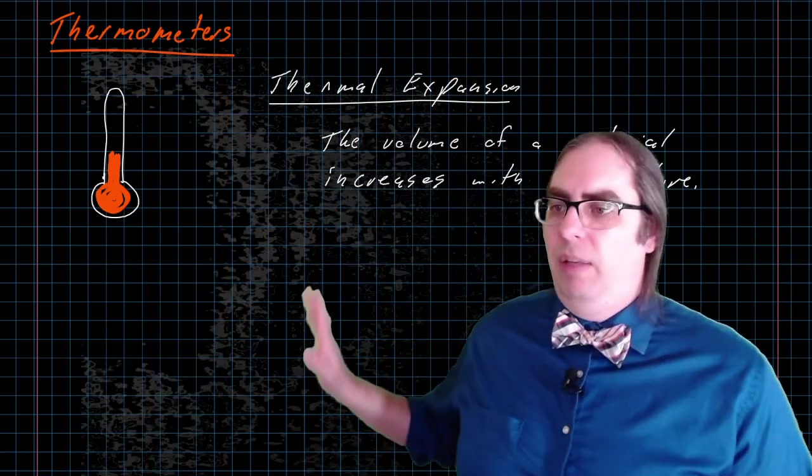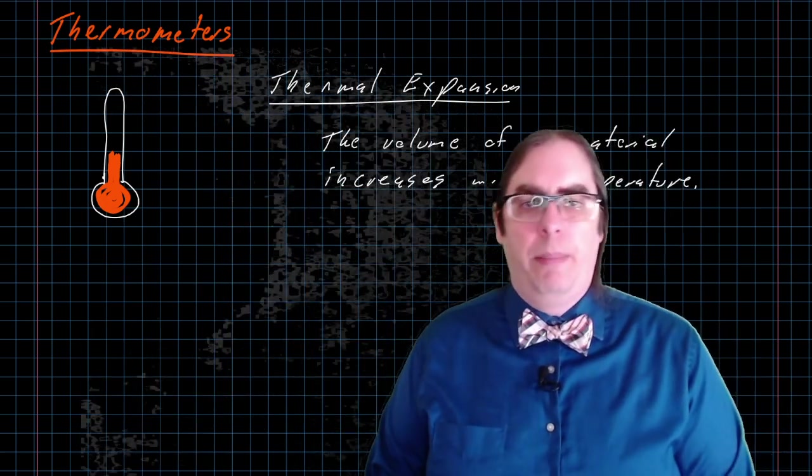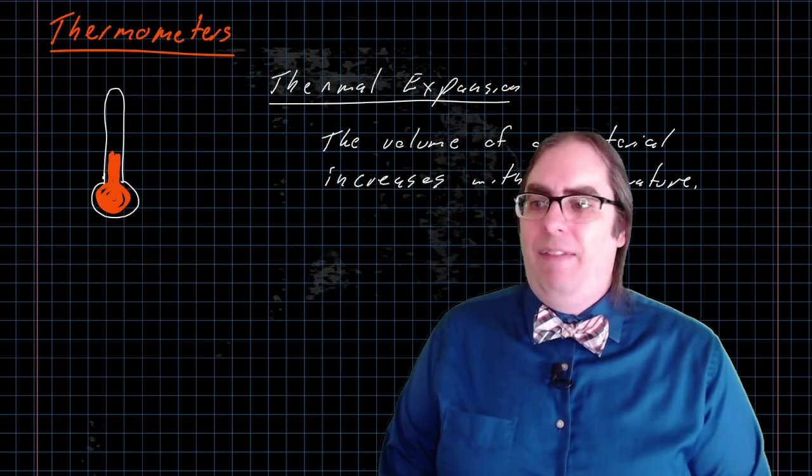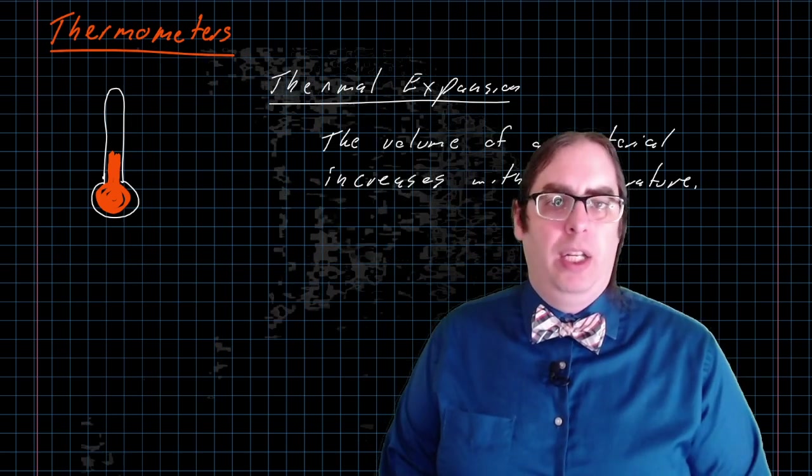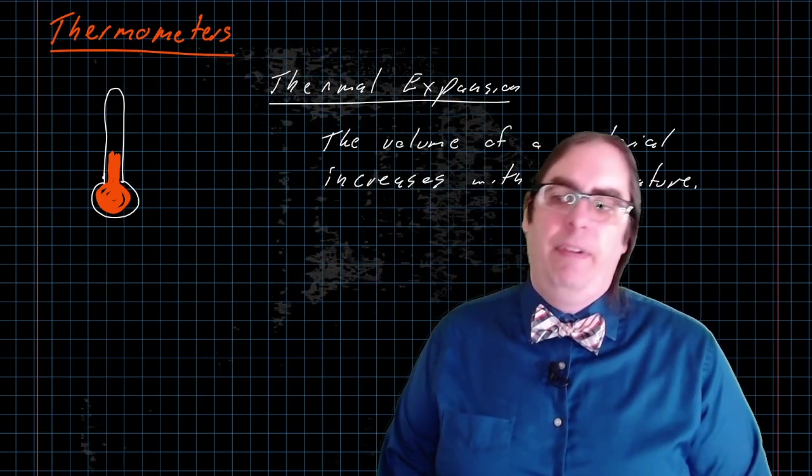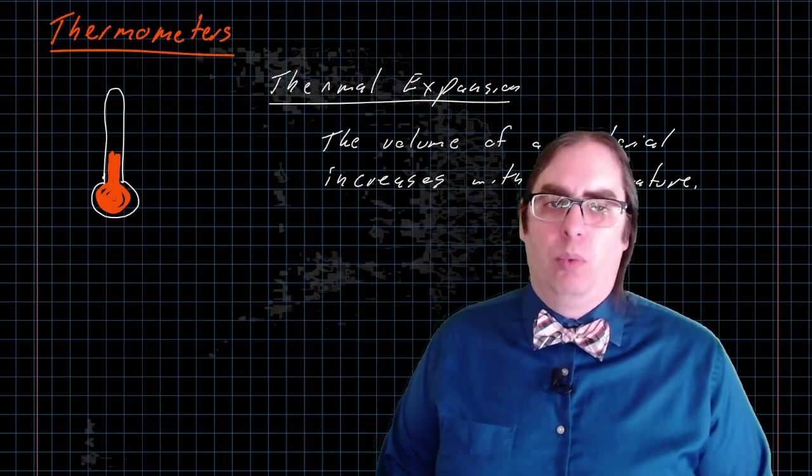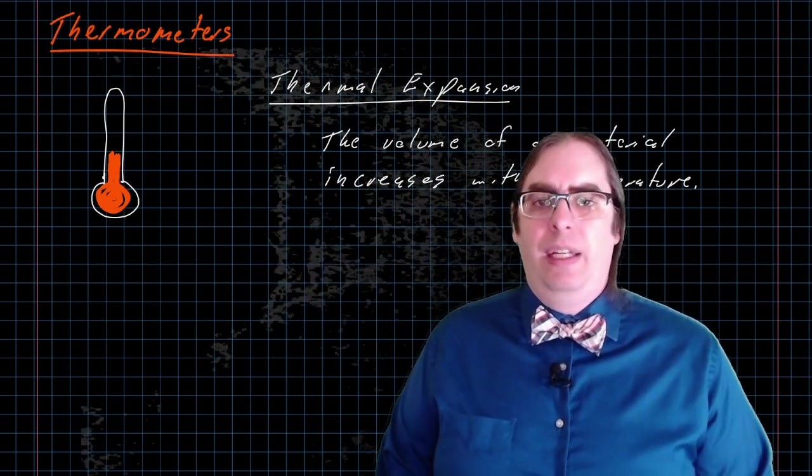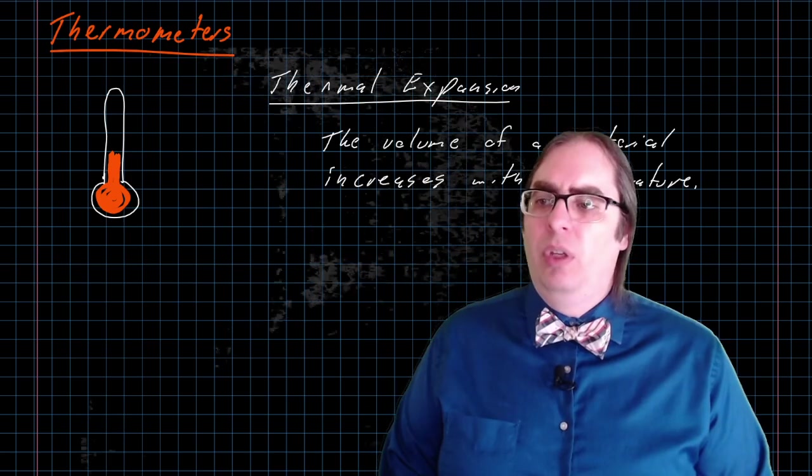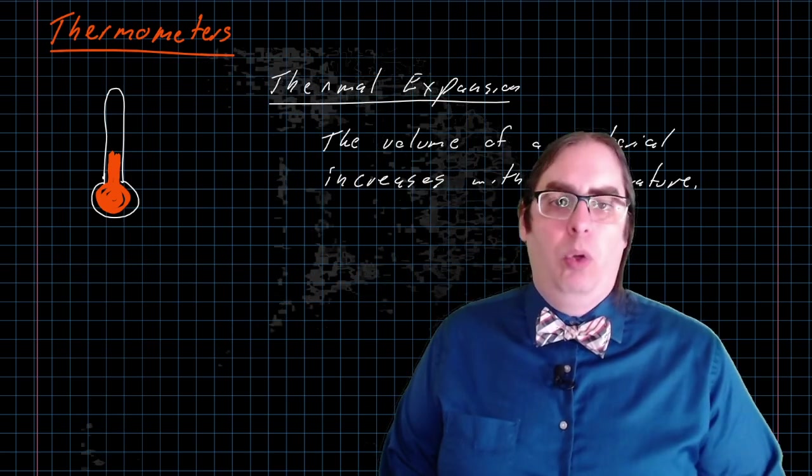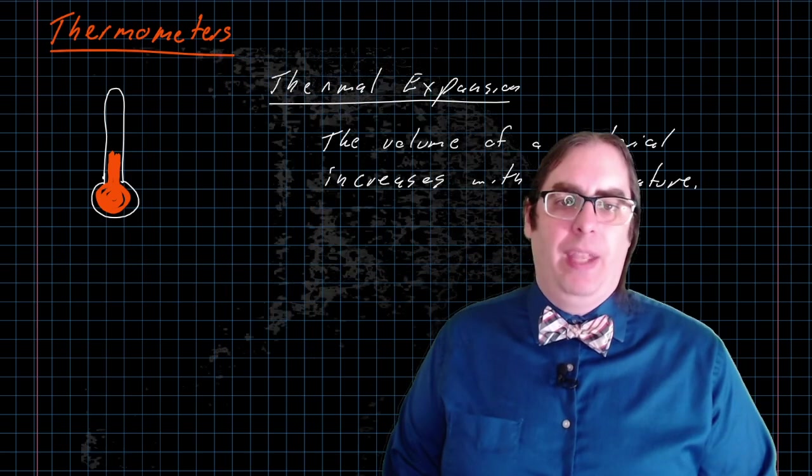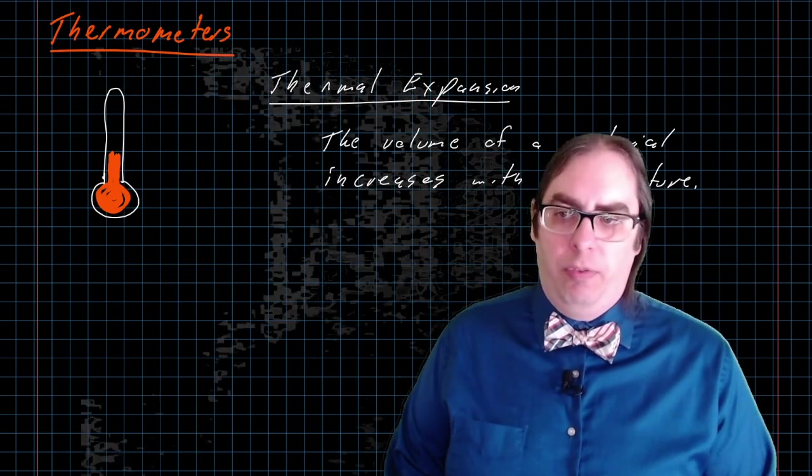The same process can be controlled in a thermometer. If we have a known volume of liquid in our thermometer, and we have a very narrow tube in which it can raise and lower, then as temperature increases, that liquid will rise up in the tube. As temperature drops, the liquid will fall down.